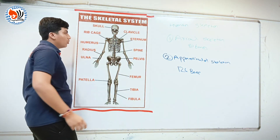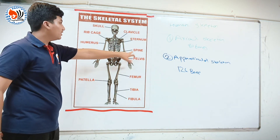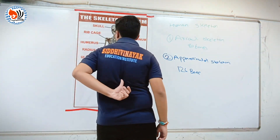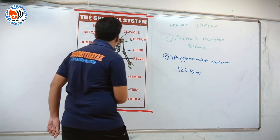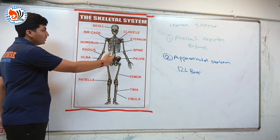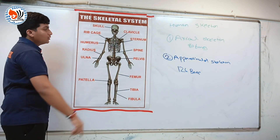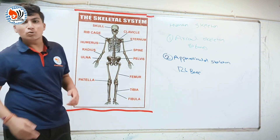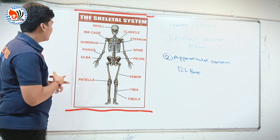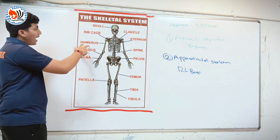The 11th and 12th ribs are known as floating ribs because they are floating in the air. Next, there is sternum — sternum is the middle part of our body. Next, there is the spine. Spine is present in the back side of our body, as you can see here. Spine is also known as the spinal cord.